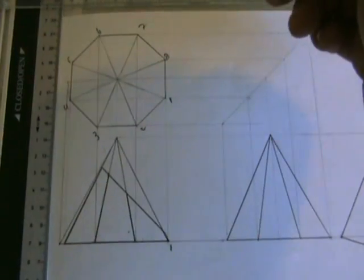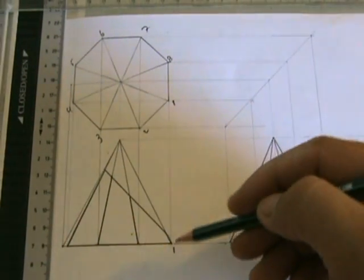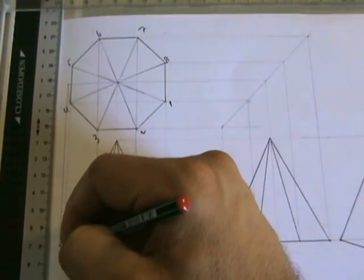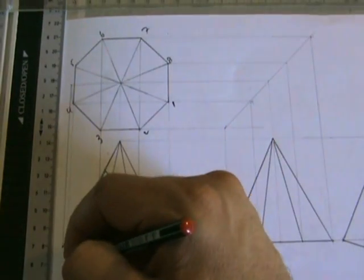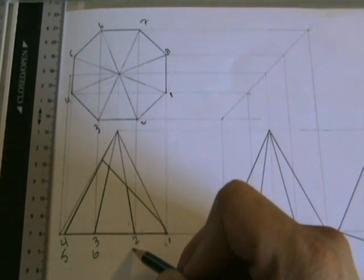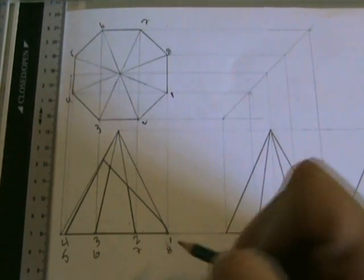Those numbers should also be projected onto the front. So here I have one, that should be two, three, four is on this side, five is with the four, six, six, seven is with the two, and eight is back to one.